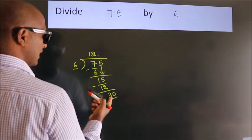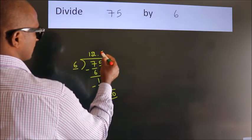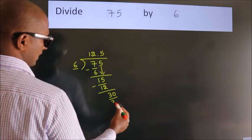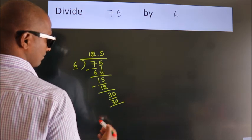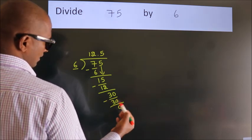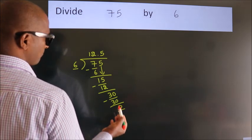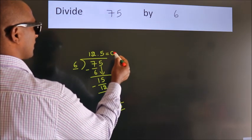When do we get 30? In 6 table. 6 5s 30. Now we subtract. We get 0. Now we got remainder 0. So this is our quotient.